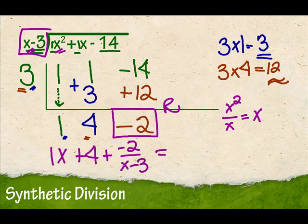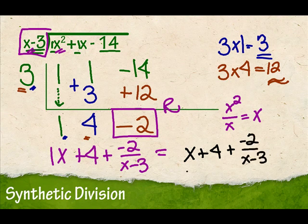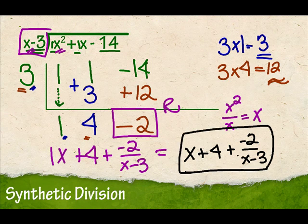Let me rewrite that one more time. It's going to be x plus 4 plus negative 2 over x minus 3, and this will be my answer. Now some instructors and some books will say minus 2 over x minus 3 — those are the same answer. And you just did synthetic division.